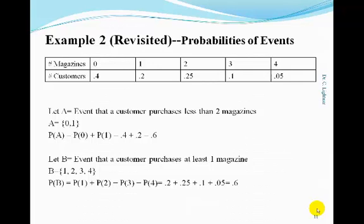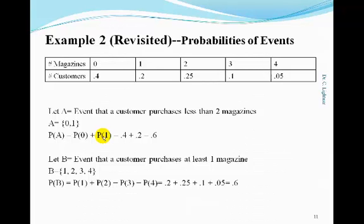Here we revisit the example for the telemarketing company. Let's define event A as the event that a customer purchases less than 2 magazines. We see that our sample space contains 0, 1, 2, 3, and 4 magazines. The event that we purchase less than 2 magazines contains the sample points 0 and 1. Therefore, if we wish to compute the probability of this event occurring, we must sum the probability that a customer purchases 0 magazines plus the probability that a customer purchases 1 magazine.